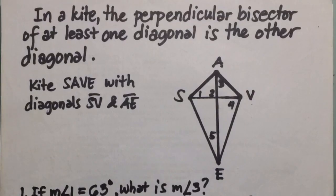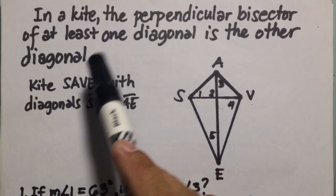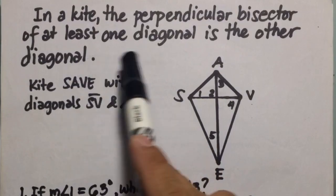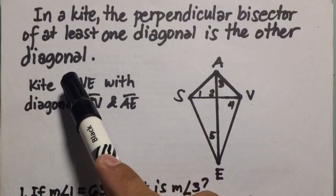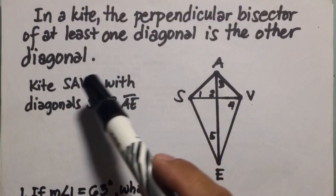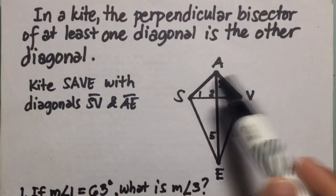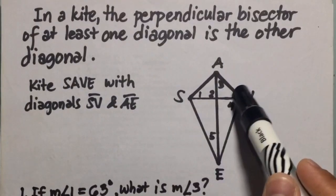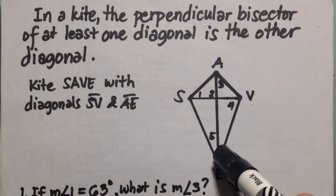First theorem. In a kite, the perpendicular bisector of at least one diagonal is the other diagonal. So we have here kite SAVE with diagonals SV and AE.